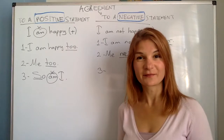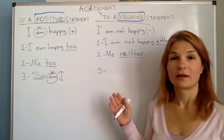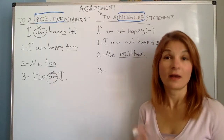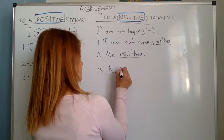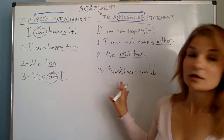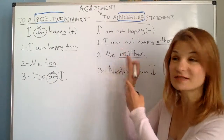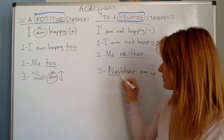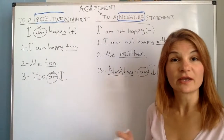I'm happy — so am I. How about when it's negative? I'm not happy. Neither am I. This is very similar, but because we're agreeing to a negative statement, we use the word 'neither' instead of 'so'. Neither am I — and again, we use the same auxiliary from the original statement.